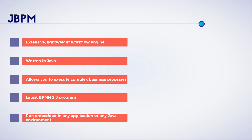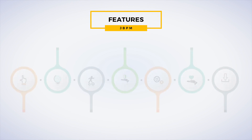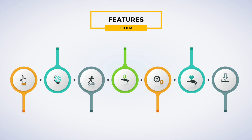JBPM can run embedded in any application or in any Java environment. Some of its core features are as follows. Human Task Service: JBPM utilizes a pluggable Human Task Service which is based on Web Services Human Task, or WS Human Task Specifications. This includes tasks that require human interaction, and they also define the data structure which stores information about these human tasks.